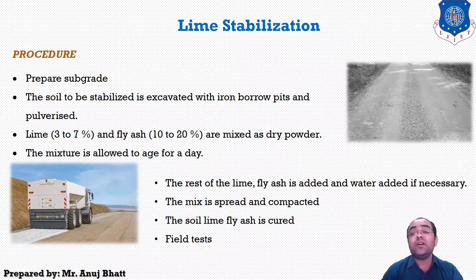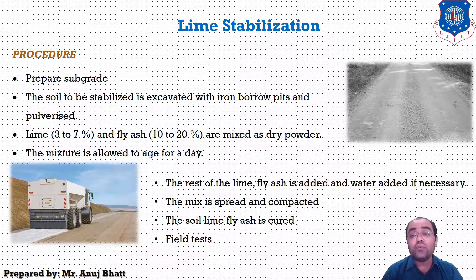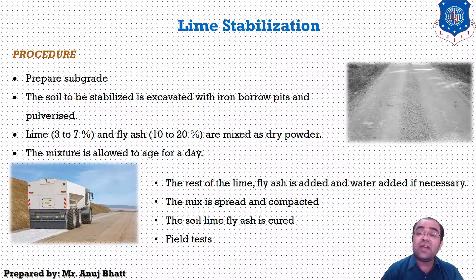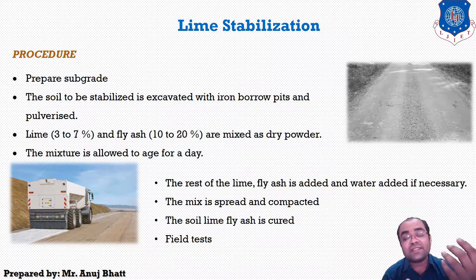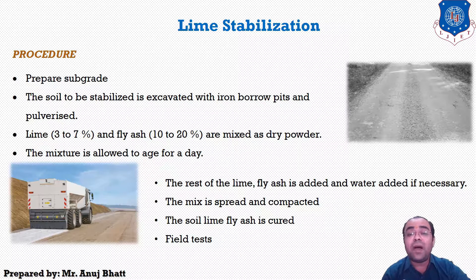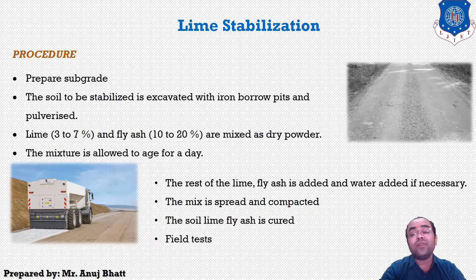Now let's talk about the construction procedure for lime stabilization. Initially, we have to prepare the subgrade. The soil to be stabilized is then excavated from the borrow pits and pulverized. After that, three to seven percent of lime and ten to twenty percent of fly ash are measured out.